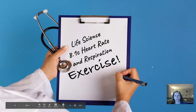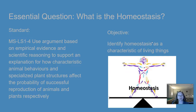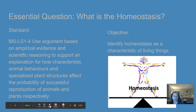Today we are going to talk about heart rate and respiration. The question today introduces a new vocabulary word: what is homeostasis? Our standard is to use argument based on empirical evidence and scientific reasoning. Today we're going to look at homeostasis as a characteristic of living things. You might not know this word yet — that's okay, we are going to learn what this word means today.